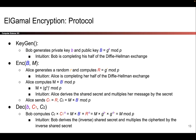If you try to encrypt larger messages, it becomes ambiguous when Bob decrypts. If Alice encrypts m, or m plus p, or m plus 2p, or m plus 3p, all of those messages when decrypted by Bob will reduce to m mod p — they're all equivalent mod p, and it's not clear which one Alice meant to send.